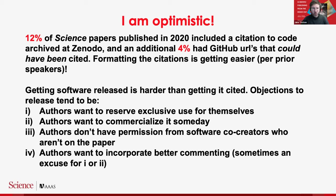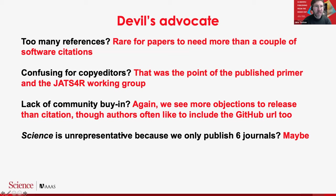We and other publishers are pushing hard on persuading authors — even if it's not open source, maybe at least make an executable available or something in between. Once we've reached an agreement with authors that they're prepared to release their code, I think we're doing really well. That 16% figure — there's a fair number of papers Science publishes that don't use code at all, so I think this is actually quite a respectable number relative to the total papers using custom software.